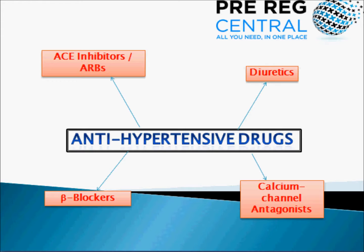Some of the beta blockers are cardio-selective, such as atenolol and bisoprolol, and what this means is that they will be more selective for the beta-1 adrenoceptors, causing less side effects. However they may lose their selectivity at higher doses.